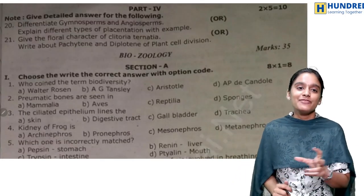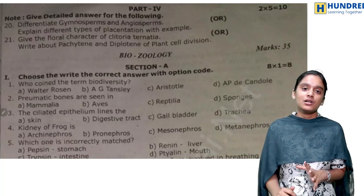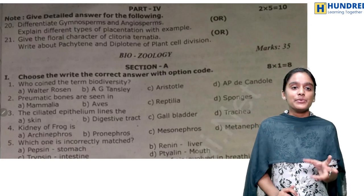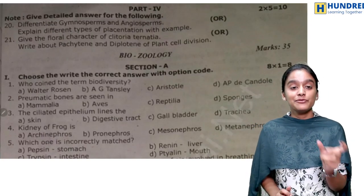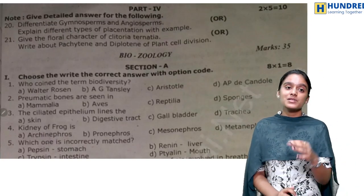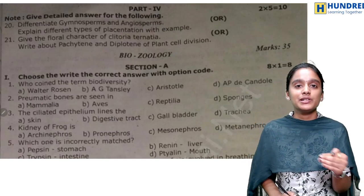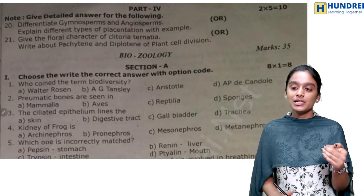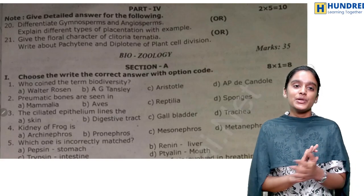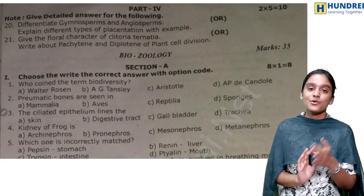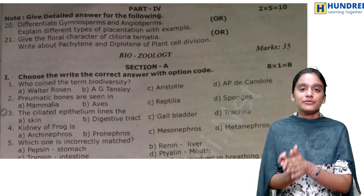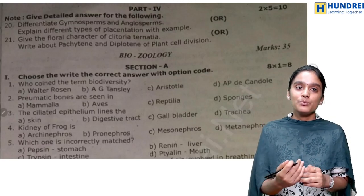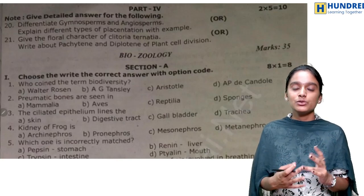For Part 4 five marks, there is an option so you can attend any of the questions. Differentiate gymnosperms and angiosperms. Different types of placentation along with the diagram — this is very important. Next, the 21st question: clitoria floral characters from your fifth chapter, which is again very important. Placentation can be found in the fourth chapter.